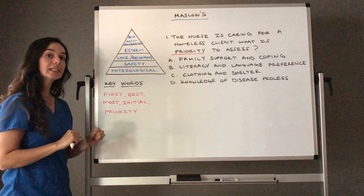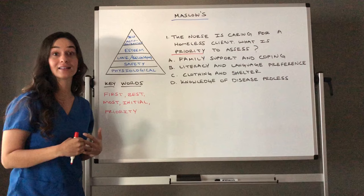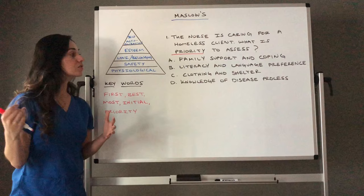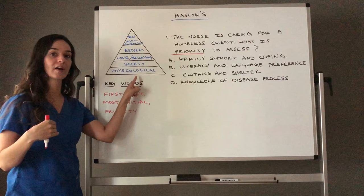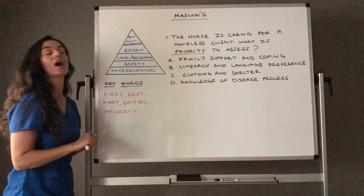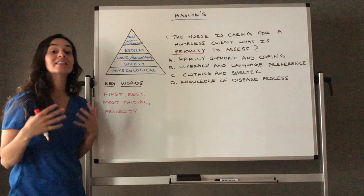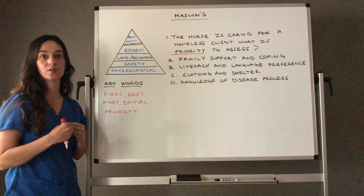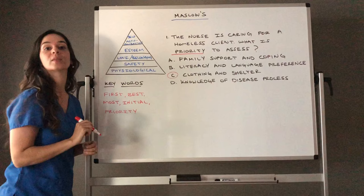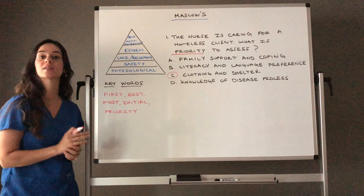Clothing and shelter — do we need those for our physical body to survive? Yes. Even on an island, you need shelter to protect you from weather. Clothing and shelter is essential for physiological survival. Knowledge of disease process is important, but if we can only focus on one thing for this homeless client, we pick according to Maslow's. The best answer is clothing and shelter, ensuring physiological needs are met.